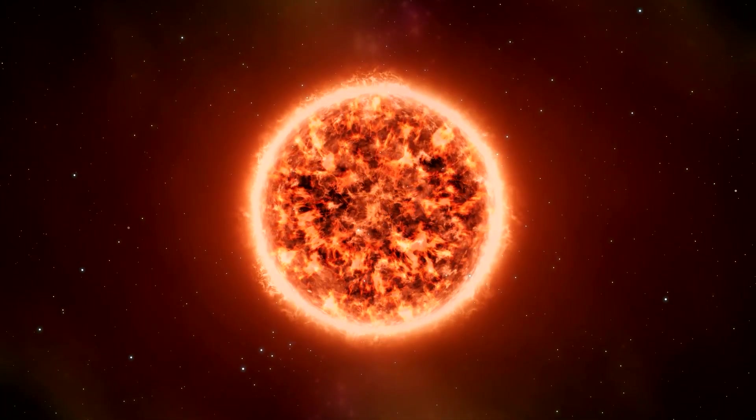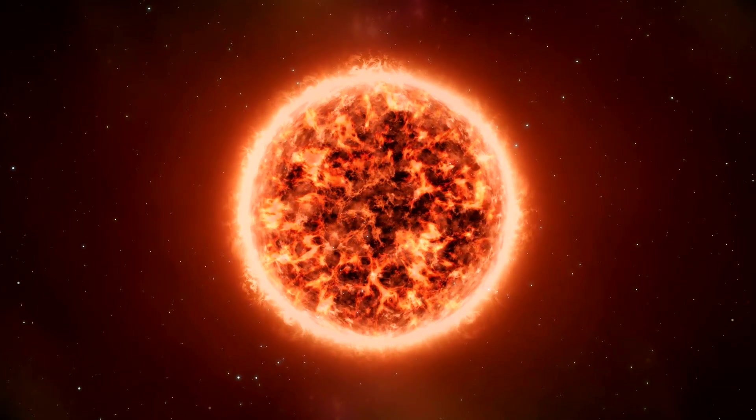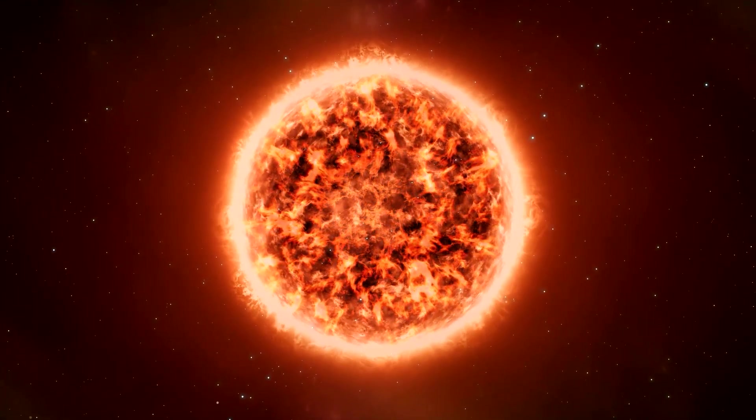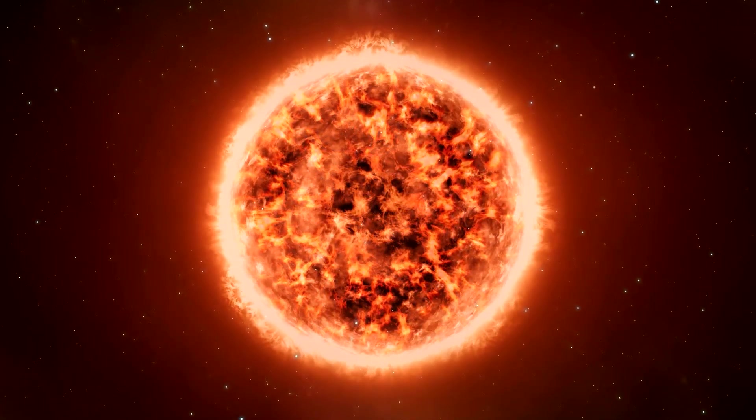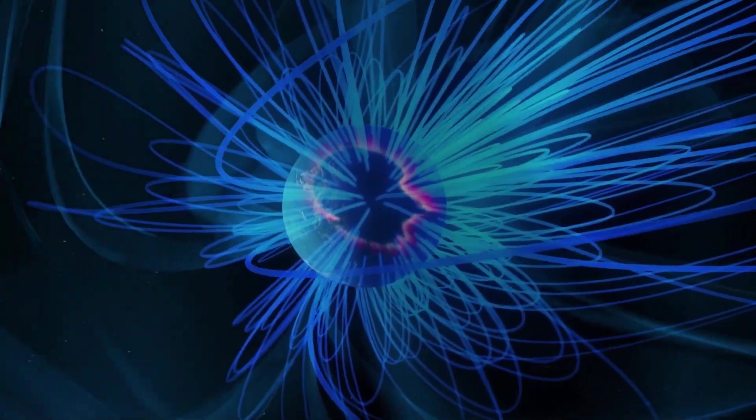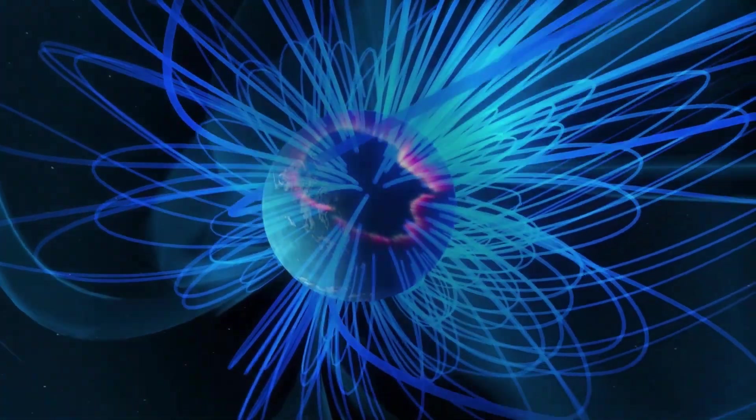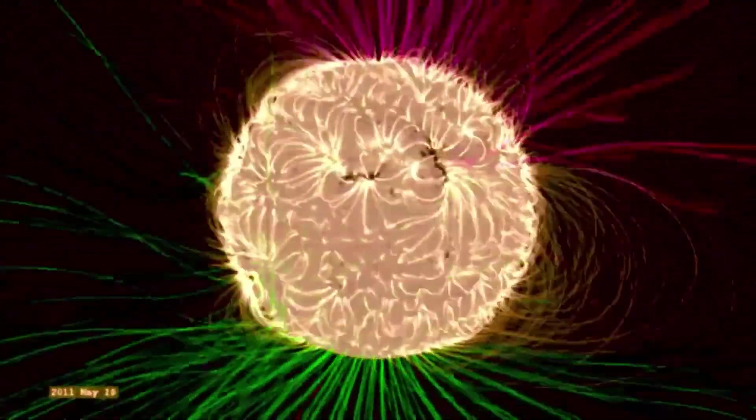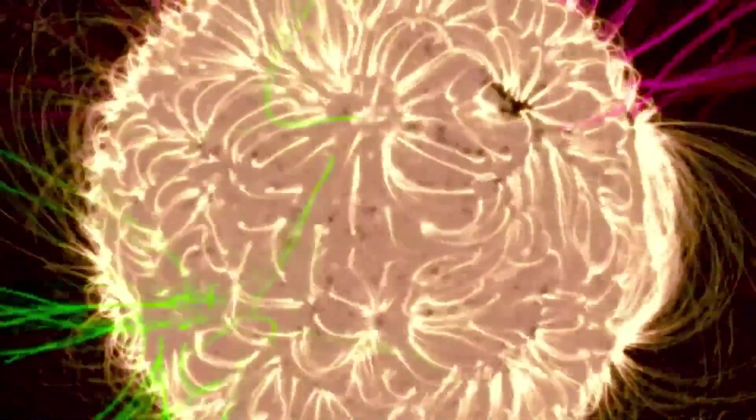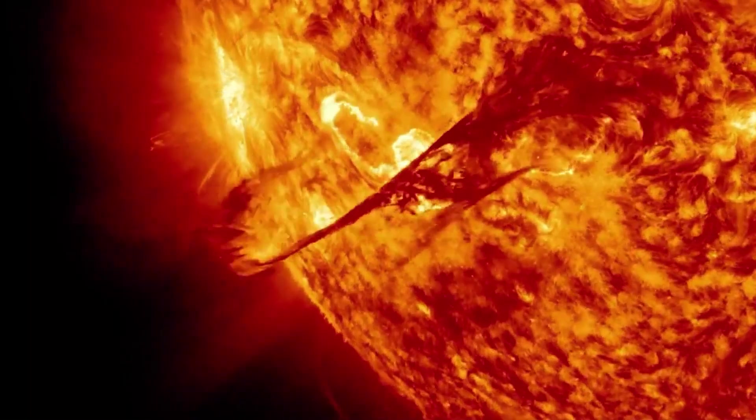Data collected by NASA's Hubble Space Telescope and other observatories indicate that Betelgeuse underwent a massive mass ejection in 2019, a behavior never before observed in a star of its type. While coronal mass ejections are common in our sun, this event on Betelgeuse is unique and arouses great interest among astronomers.